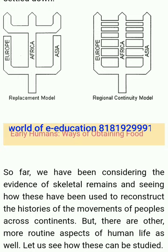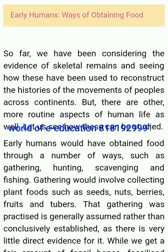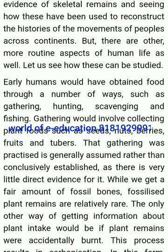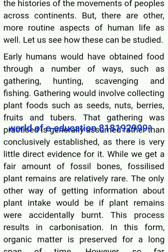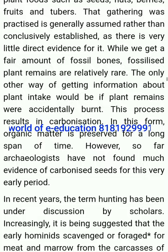Early humans would have obtained food through a number of ways, such as gathering, hunting, scavenging and fishing. Gathering would involve collecting plant foods such as seeds, nuts, berries, fruits and tubers. Gathering was practiced as generally assumed rather than conclusively established, as there is very little direct evidence for it — while we get a fair amount of fossil bones, fossilized plant remains are relatively rare. The only other way of getting information about plant intake would be if plant remains were accidentally burnt — this process results in carbonization, in which form organic matter is preserved for a long span of time. However, archaeologists have not found much evidence of carbonized seeds for this very early period.